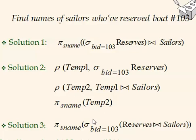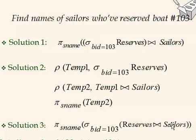Solution three is less efficient because it joins reserves with sailors first using a Cartesian product, then applies the selection. If reserves has 200 tuples and sailors has 10, the Cartesian product produces 2,000 tuples. In contrast, filtering reserves first leaves just one matching tuple before joining, yielding only 10 tuples — a significant difference.